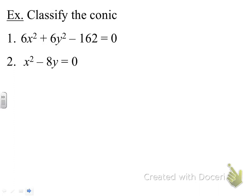For number 2, we can ignore everything else except for that squared term. Notice that there's only one squared term—it's the x² term. The A coefficient is 1, and since there's only one squared term, we know that this is an equation of a parabola.